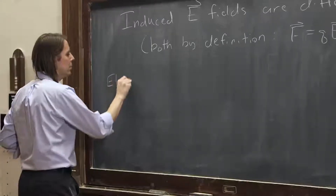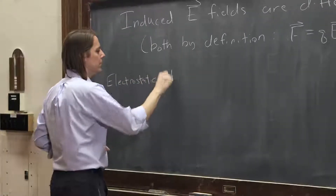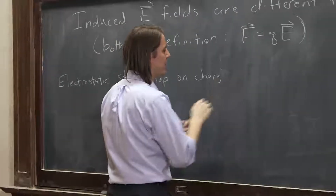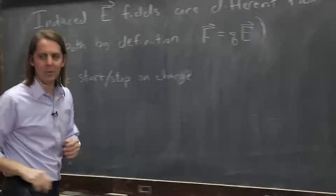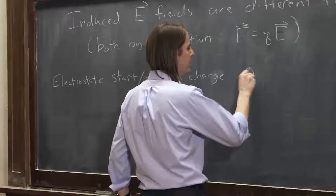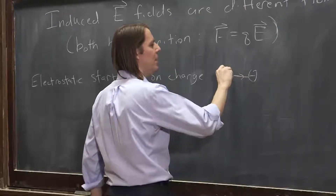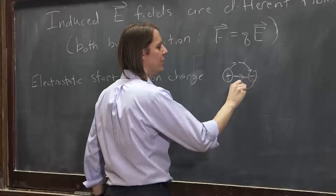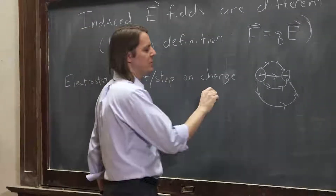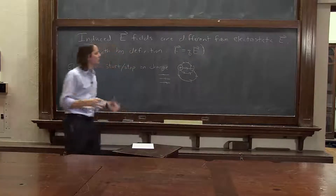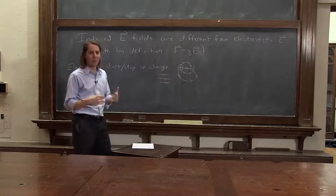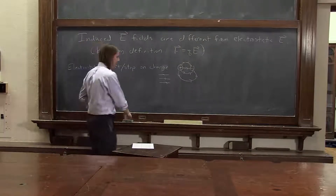One example: electrostatic fields start and stop on charge. When I say an electrostatic field, I mean everything we've talked about until the last few minutes — all the stuff from the beginning of the class was electrostatic. So if we have a positive charge here and a negative charge here, we know we get a strong field going this way. If we draw these field lines, they always start on the positive and end on the negative. If we ever drew a uniform electrostatic field, we knew somewhere there must have been a plane of charge making it. Any electrostatic field we ever drew had to start and stop on charge somewhere, even if it were at infinity.